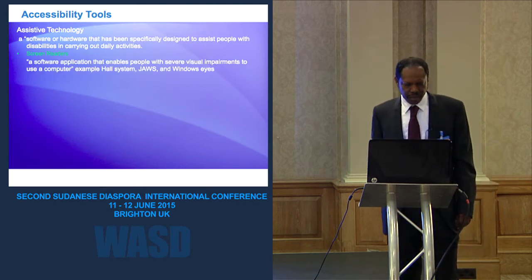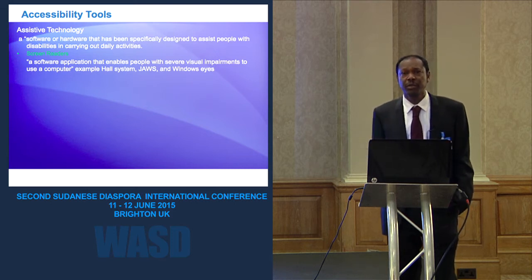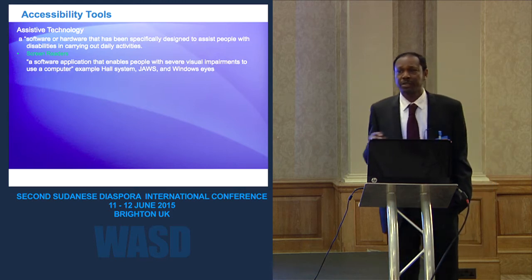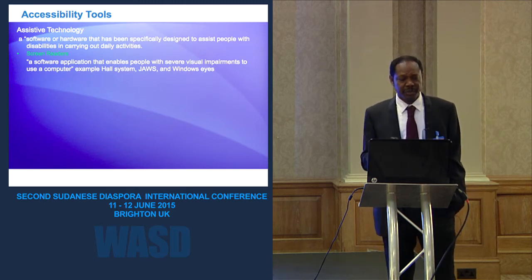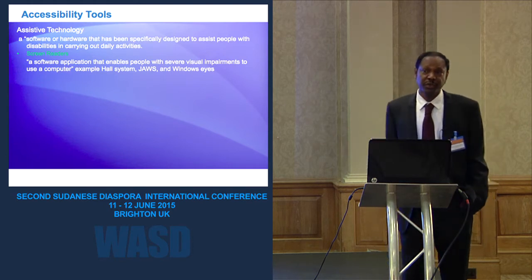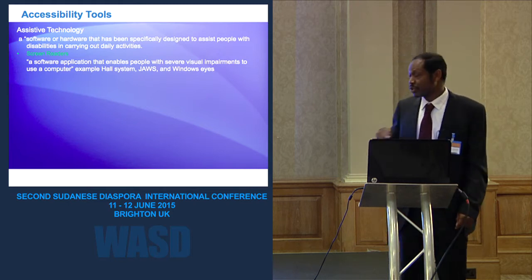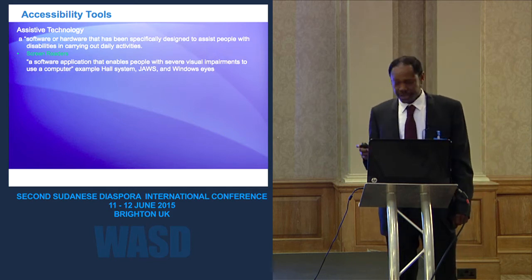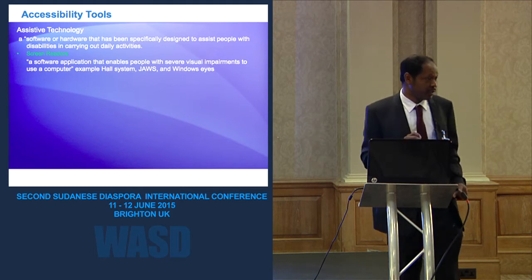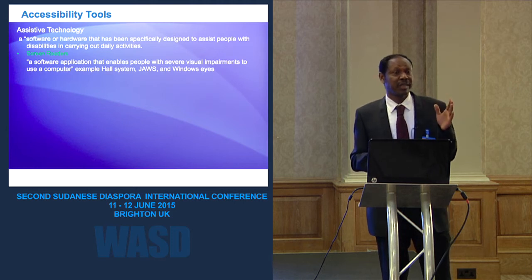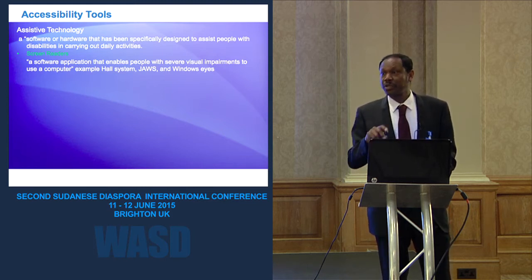We have screen readers — software applications that enable people with severe visual impairment to use a computer. Examples include Supernova, JAWS (Job Access With Speech), and Windows Eyes. Windows Eyes enables visually impaired users to work with video content using keyboard shortcuts like Ctrl+Alt and Shift+F1. JAWS is a screen reader that reads screens for blind and visually impaired people without difficulty, reading the contents of the screen aloud.